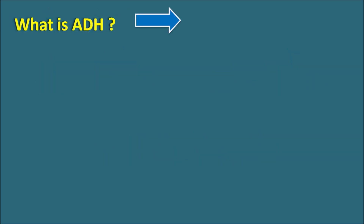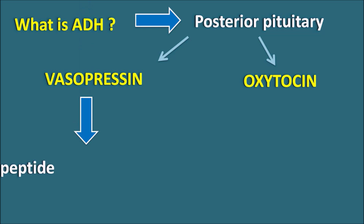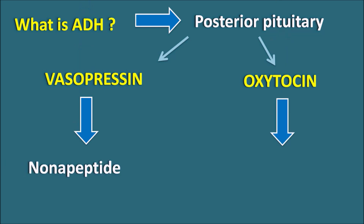What is ADH? ADH is the anti-diuretic hormone that is released from the posterior pituitary. From the posterior pituitary two hormones are released: one is vasopressin and the second one is oxytocin. Even though these two hormones have different functionality, they are made up of a similar amino acid sequence. Vasopressin is a nonapeptide having nine amino acids, and oxytocin also has nine amino acids and is also a nonapeptide.